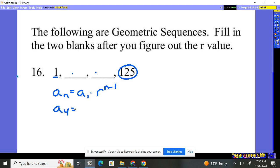So, the fourth term is equal to the first term, which we know is what? One times the rate, we don't know, to the n minus 1. Well, we do know n, in this case, is four. So, this is to the 4 minus 1, 3.